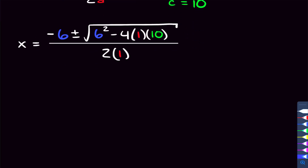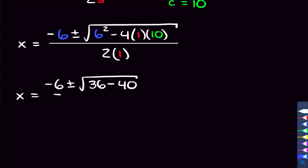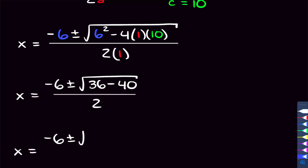Now it's time to simplify. We get that x is equal to negative 6, plus or minus the square root of 6 squared — that's 36 — minus 4 times 1 is 4, times 10 is 40. And that's over 2 times 1, which is 2. The last thing to do is subtract those two numbers under the square root: 36 minus 40 gives us negative 4. So we have negative 6 plus or minus the square root of negative 4, over 2.